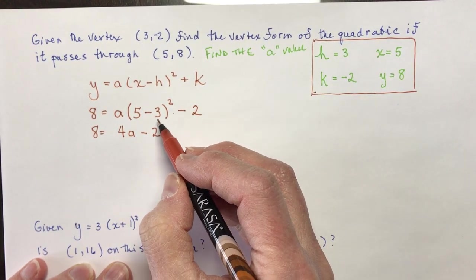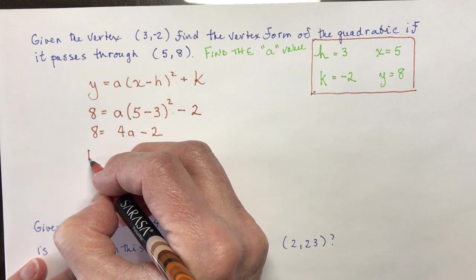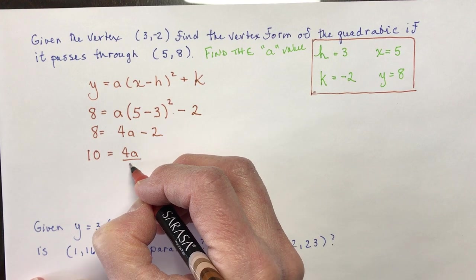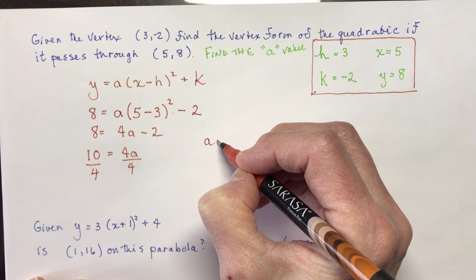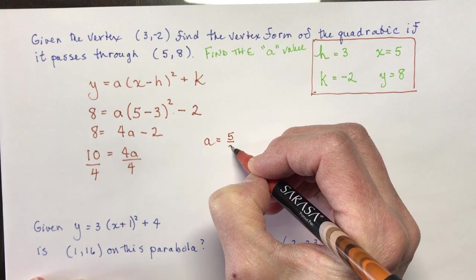I bring the 2 to the other side of the equation. Of course, I add. That gives me 10 is 4a. And finally, I'm going to divide by 4 to get 1a. So a is going to be equal to 10 over 4 or 5 over 2.